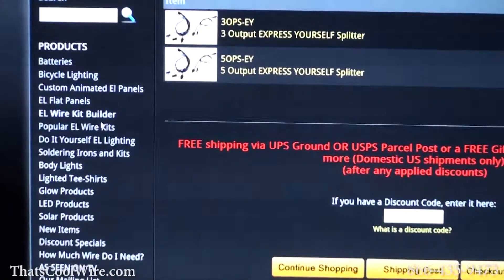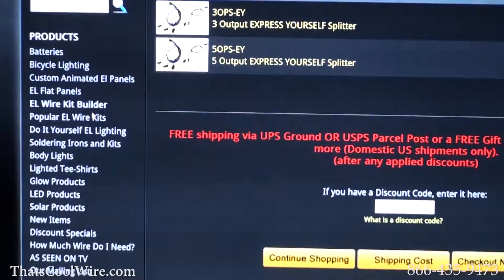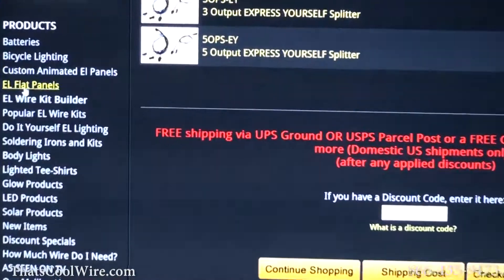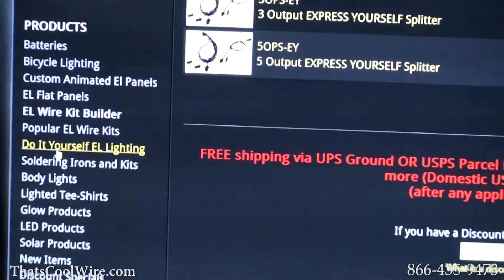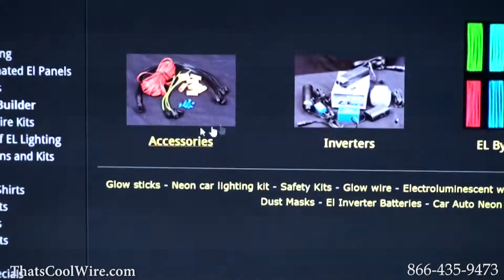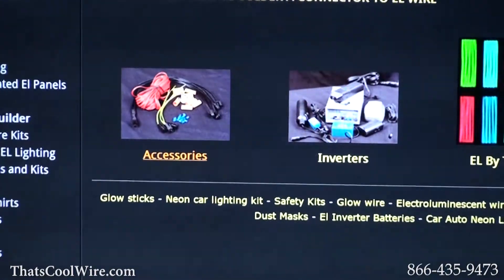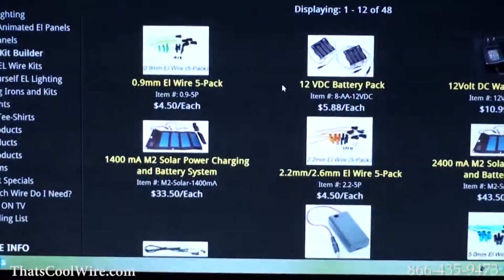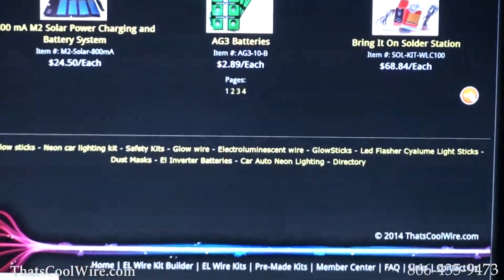The other way you can do it, because the splitters are good for EL wire or the EL flat panels, so we went to the flat panels, you clicked on Express Yourself. If you want to go to Do-It-Yourself EL Lighting, again it's on the left-hand side, you're going to click on Accessories. And when the accessories come up, currently it's going to be on page two.